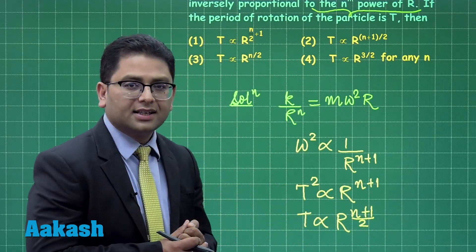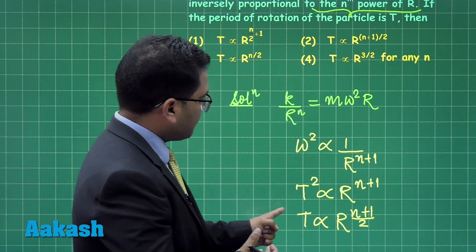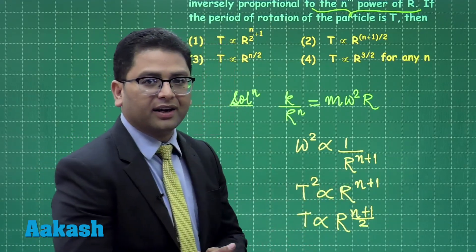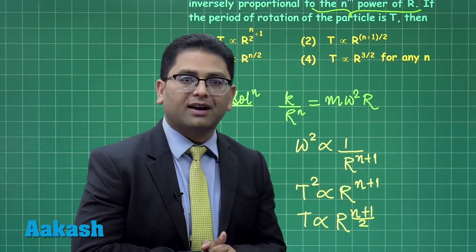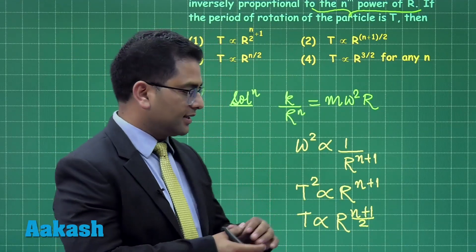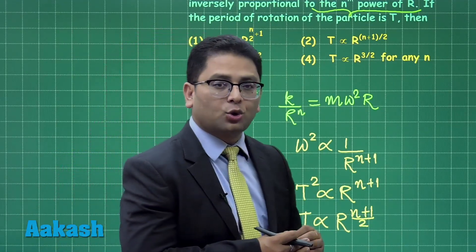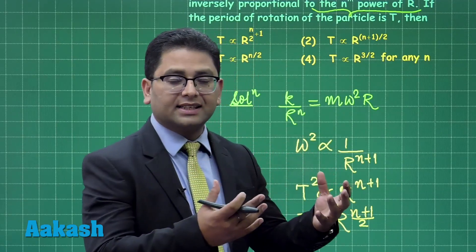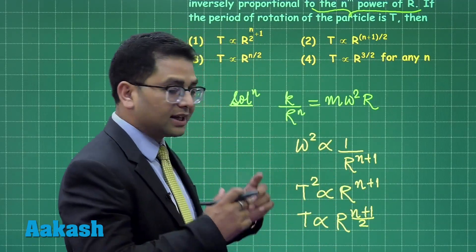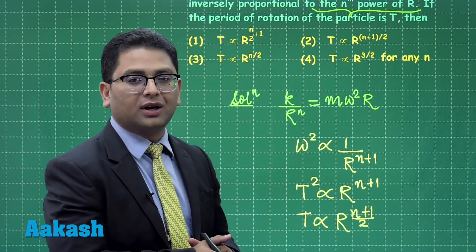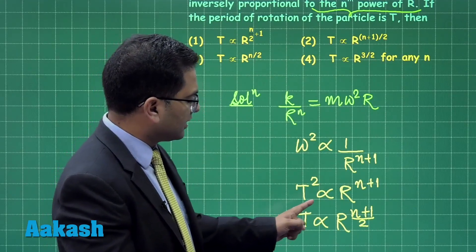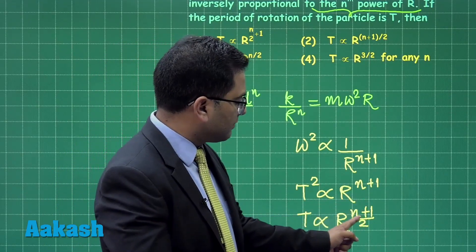Just try to find the conclusion that time period depends in this particular way. If you remember in gravitation, what happens that the force varies as square of the distance in an inverse manner. So there t square is directly proportional to r cube. You can just even put the value 2 plus 1 is 3 by 2.